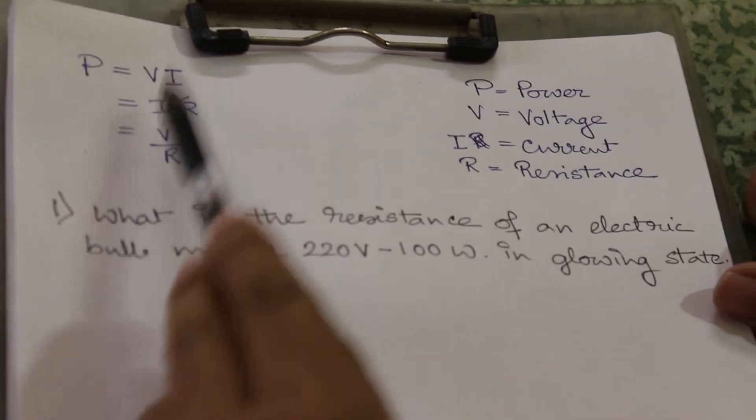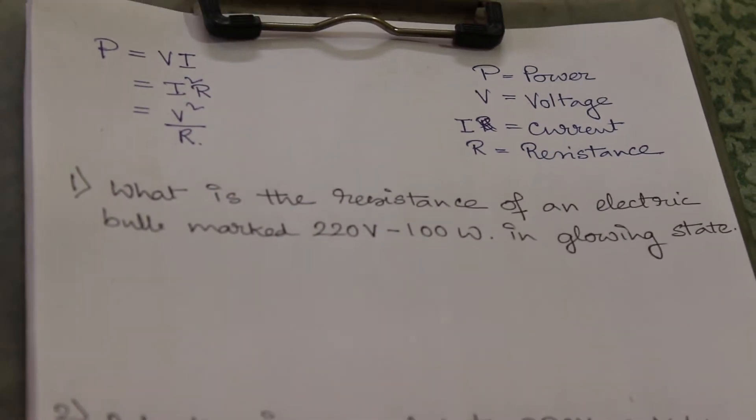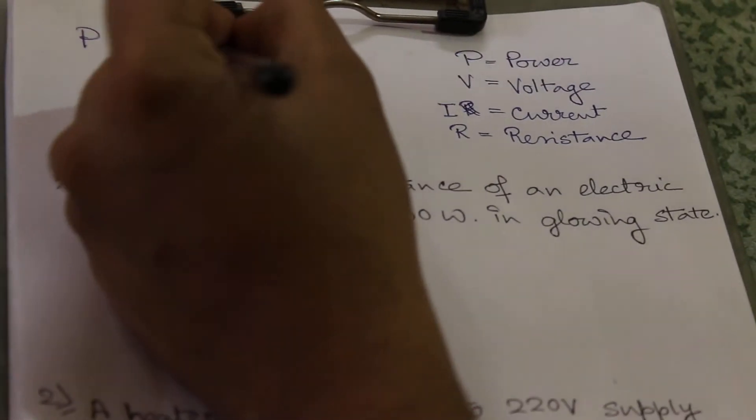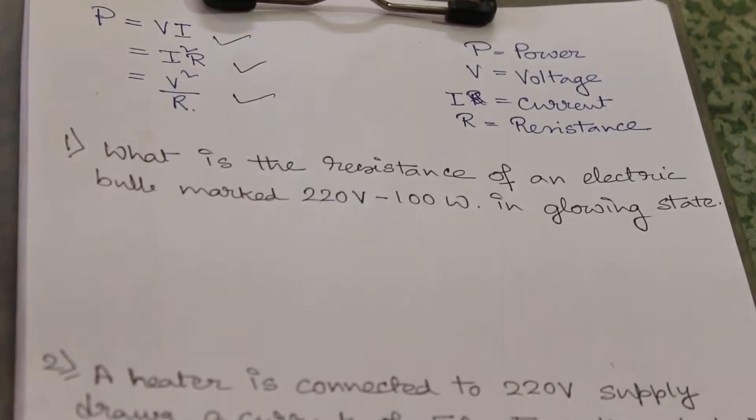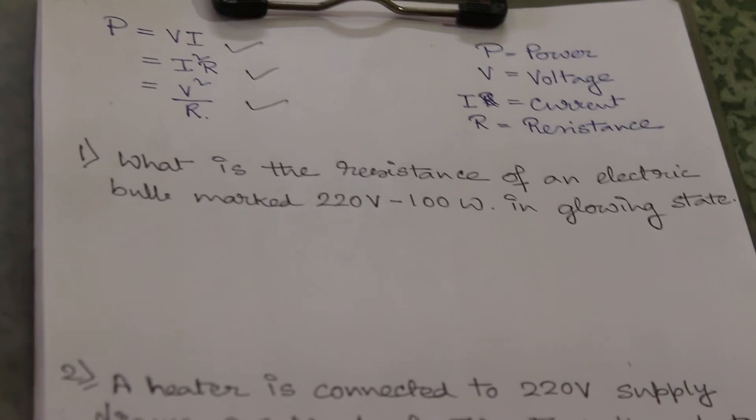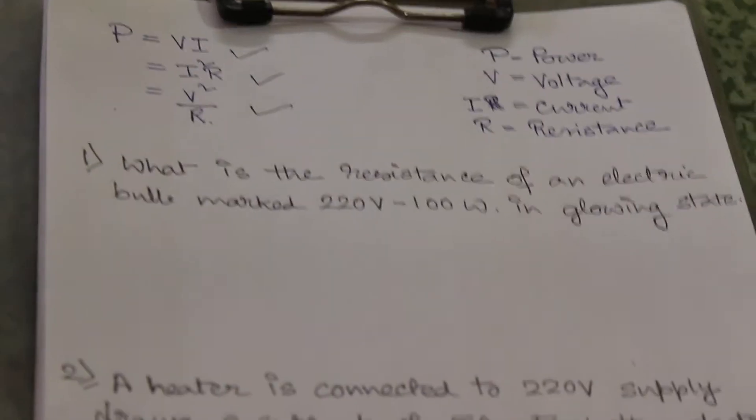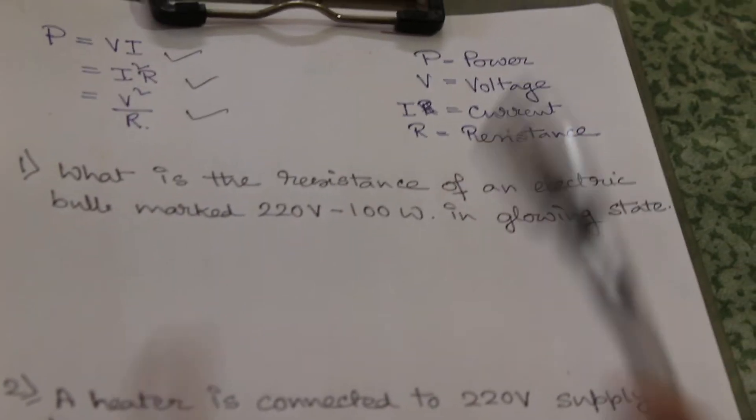The equation of power: P equals V into I, or I squared into R, or V squared by R. All these formulas can be used depending on situation, where voltage is V, power will be denoted by P, current will be I, and resistance will be R.